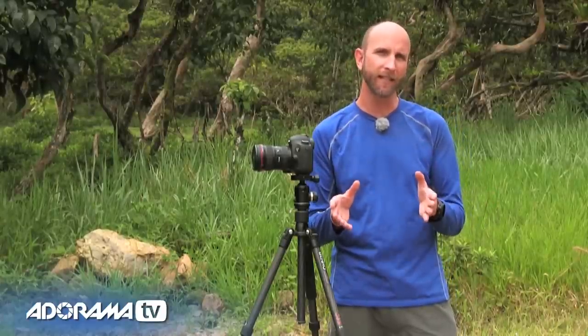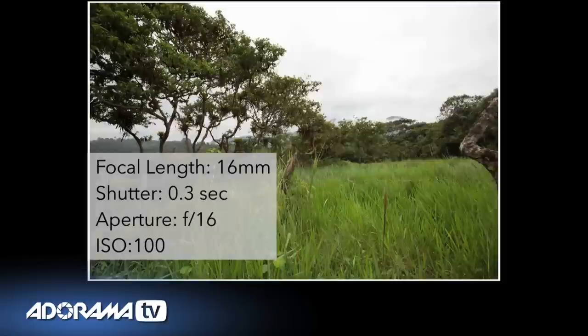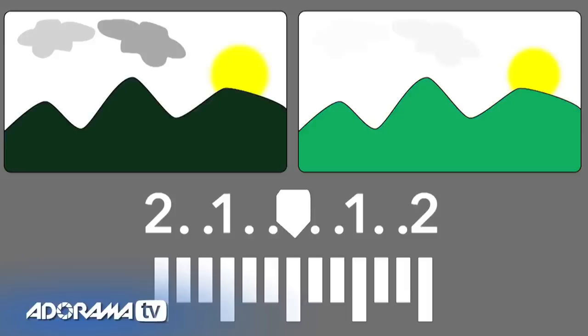First, let's talk about what exposure bracketing is. Bracketing is simply taking a series of photos of the same scene — usually three photos: one that's exposed correctly, one that is underexposed, and one that is overexposed. Normally you under and overexpose by the same amount, so if your underexposed shot was underexposed by one stop, your overexposed shot would be overexposed by one stop as well.